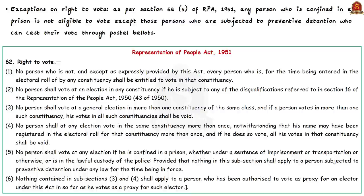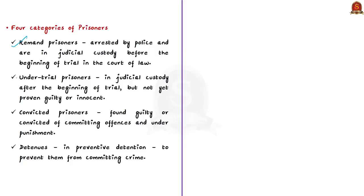One of the restrictions is that as per Section 62, Clause 5, any person who is confined in prison is not eligible to vote, except those subjected to preventive detention. Only those under preventive detention can cast their vote through postal ballots. Those confined in prisons or police custody fall into four categories: remand prisoners, under-trial prisoners, convicted prisoners, and detainees.